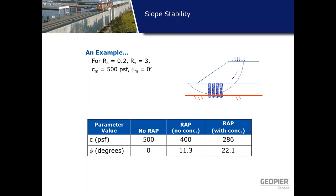Taking an example with RA of 0.2 (20%), stress concentration RS of 3, and matrix soil phi of 0 degrees: with no wrap the values are cohesion 500 PSF and phi 0 degrees; with wrap but no stress concentration (RS=1), cohesion is 400 PSF and phi is 11 degrees; with wrap and RS of 3, cohesion is 286 PSF and phi is 22 degrees. Comparing no wrap versus wrap with stress concentration shows a significant difference — 0 degrees to 22 degrees — illustrating how shear strength increases due to installation of ground improvement elements.